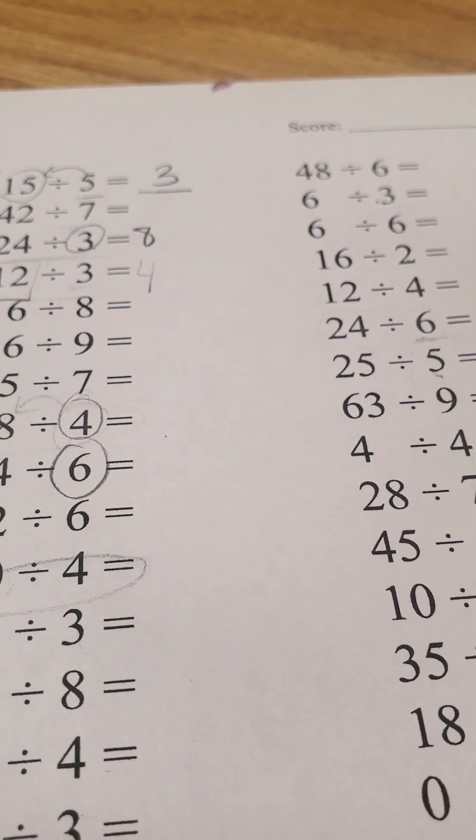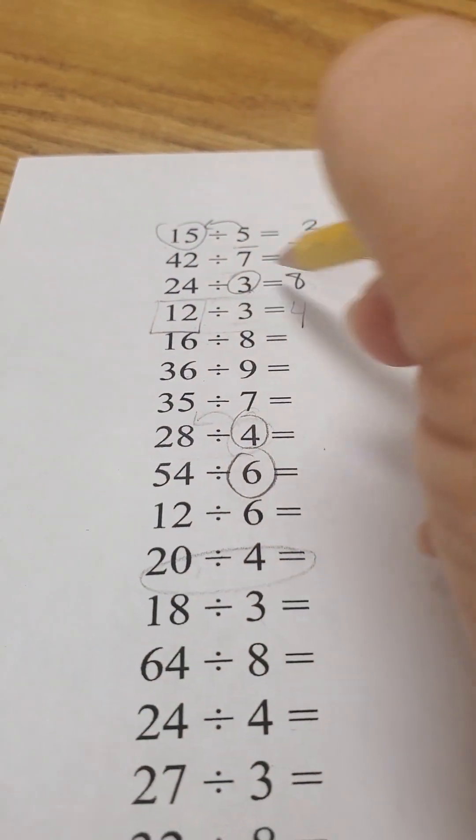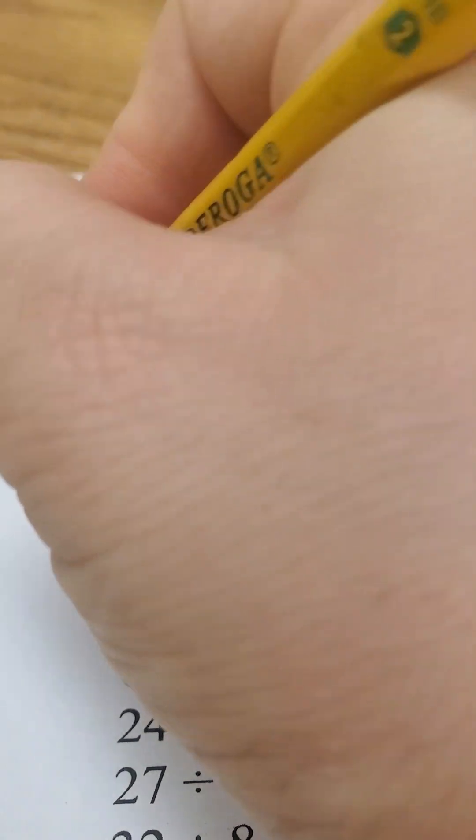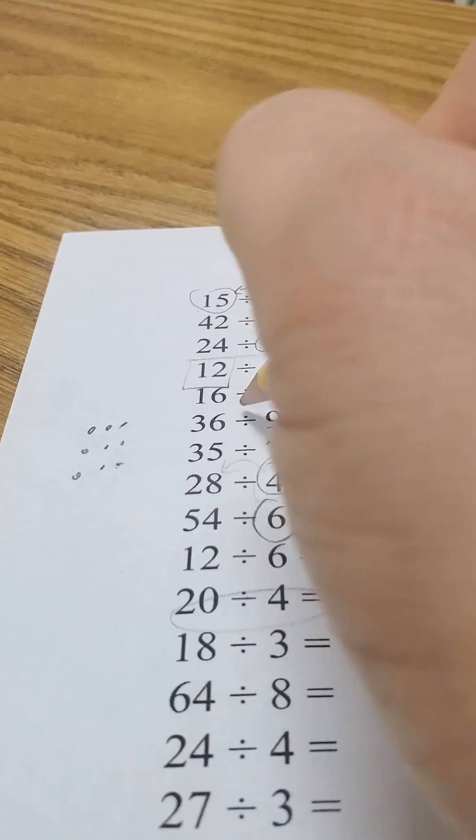She can also draw pictures. So if I want to count by 3's until I get to 24: 1, 2, 3, 4, 5, 6, 7, 8, 9. I don't suggest this, because she knows the song.